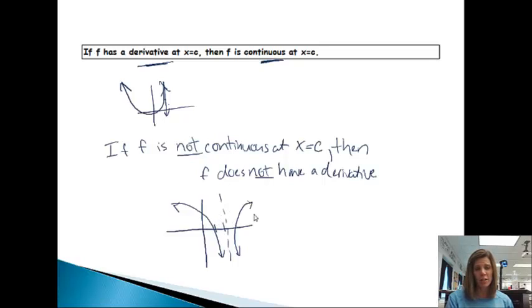So if I was asking, where does this have a derivative or not have a derivative? I would say that there is no derivative at x equals 2. And the reason that there's no derivative at x equals 2 is because it's not continuous there. And if it's not continuous, it can't have a derivative.